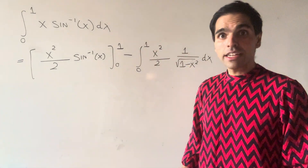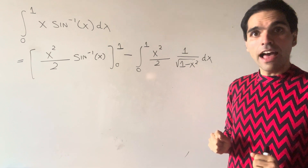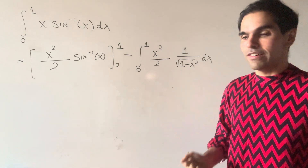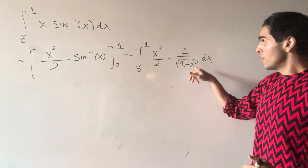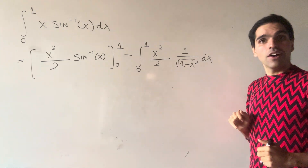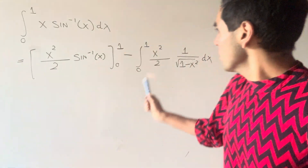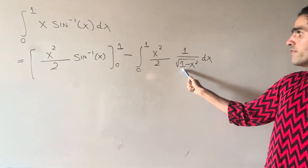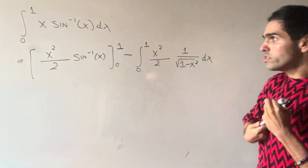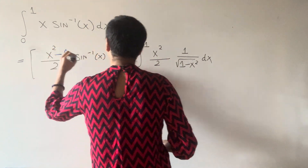Here's the trick. For the antiderivative of x, we can choose any antiderivative. So in particular, let's choose one that will cancel out this square root. Because we have one minus x squared here, let's choose the antiderivative x squared minus one over two.